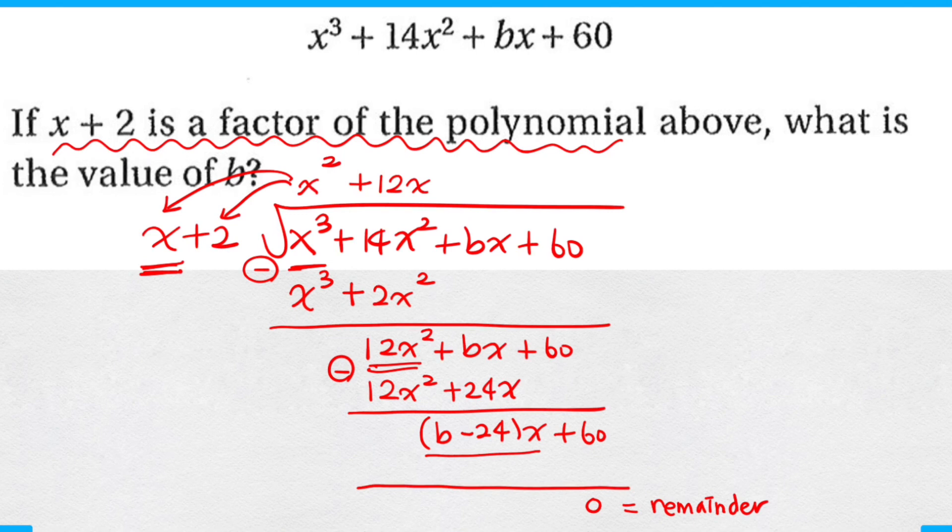So in order to get zero, I must multiply by 30 to get positive 60 here. Now working backwards, that means that for the x term I get 30x. Knowing that the remainder is zero, I can simply say that b minus 24 is equal to 30. Therefore, b must be equal to 54.